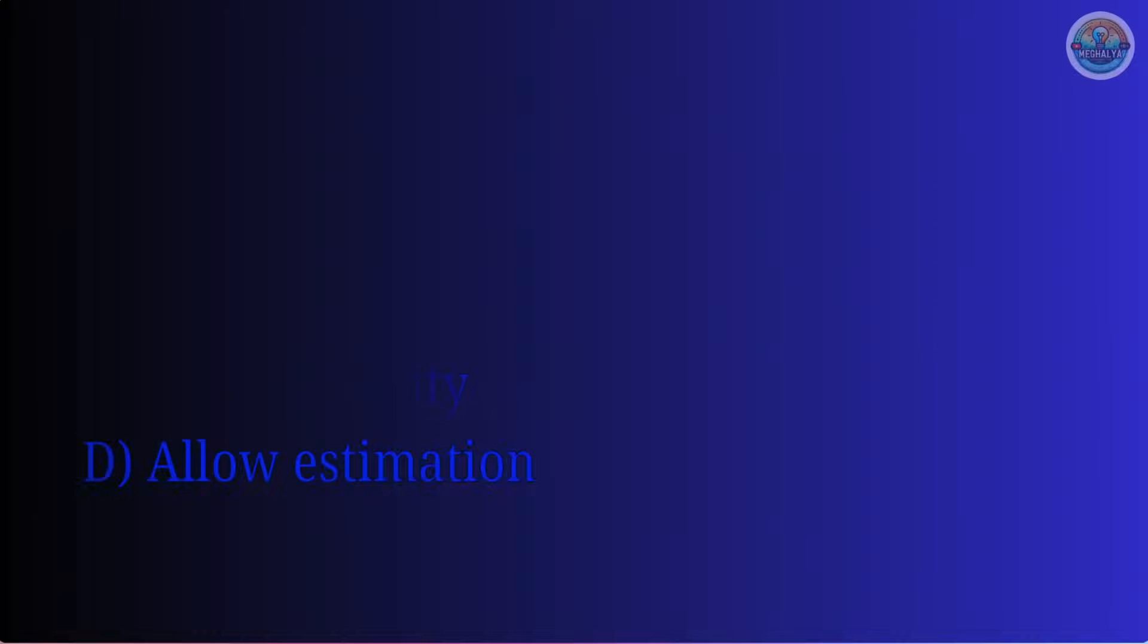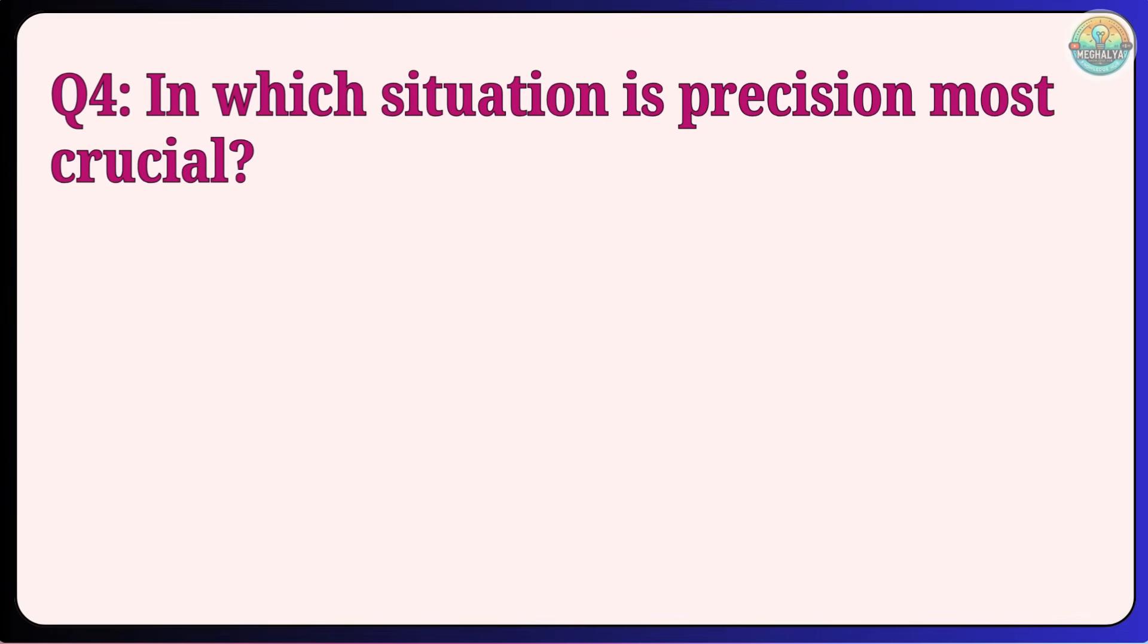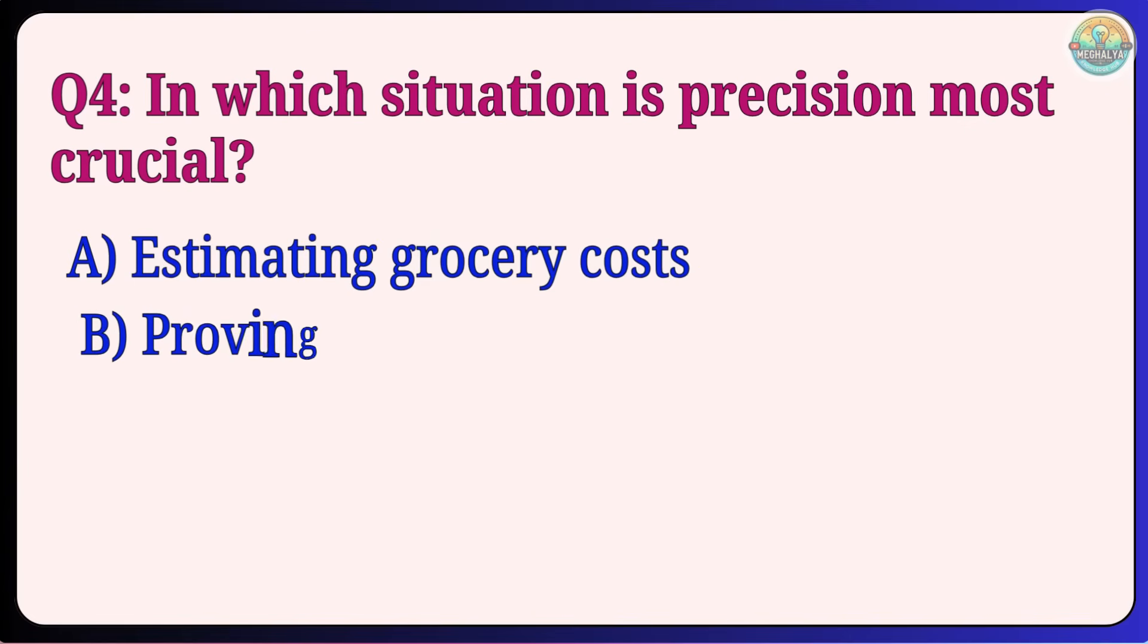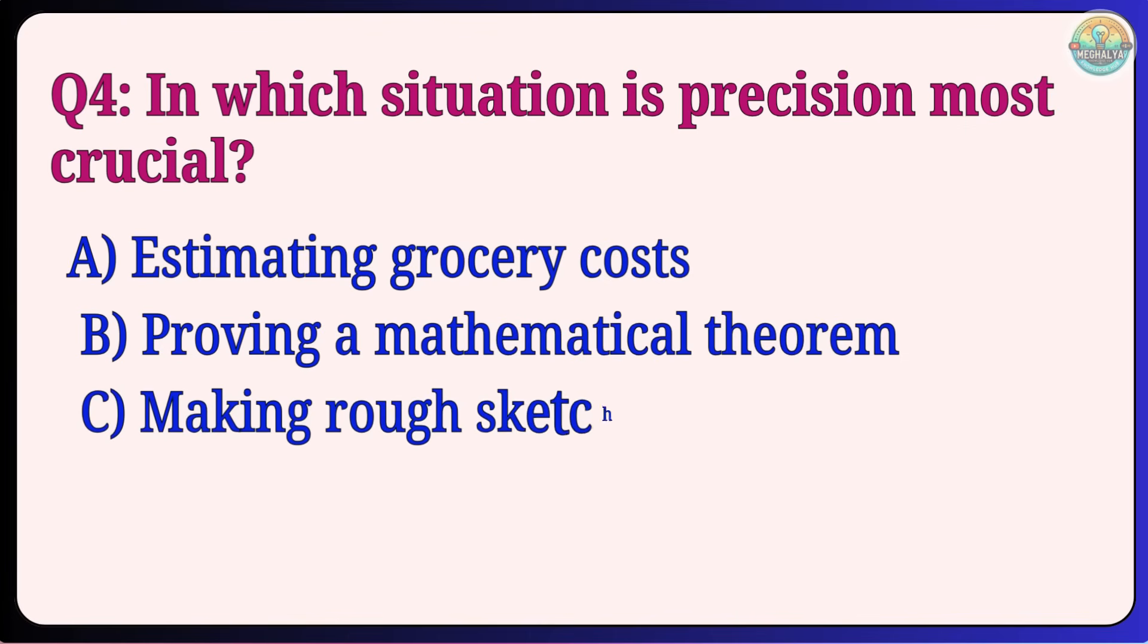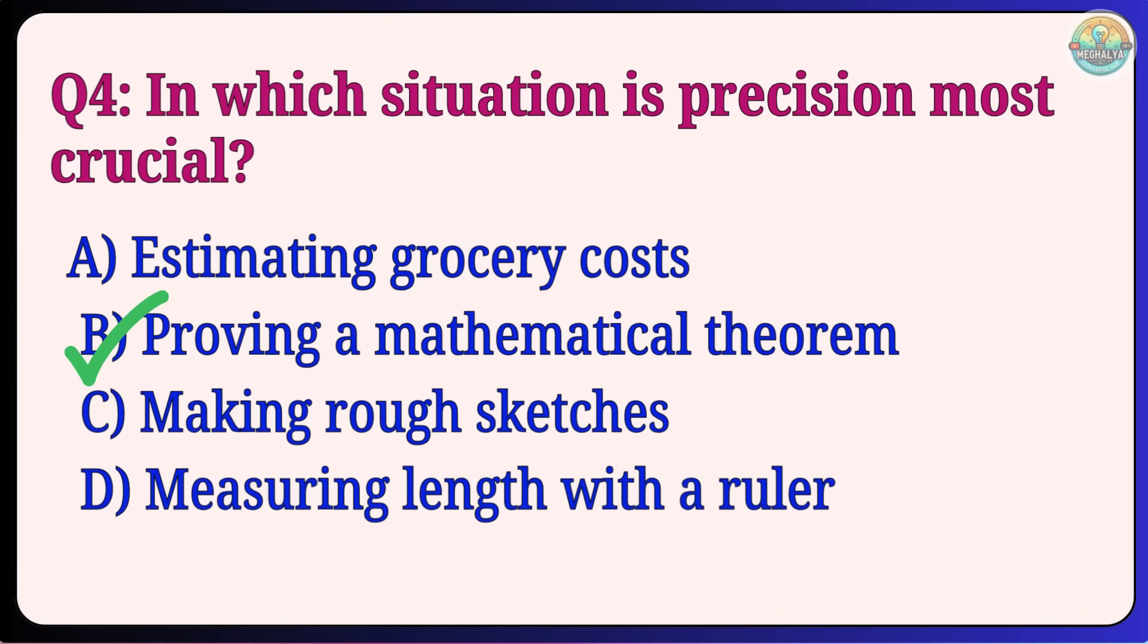Question 4: In which situation is precision most crucial? Estimating grocery costs, Proving a mathematical theorem, Making rough sketches, Measuring length with a ruler. Answer: B, Proving a mathematical theorem.